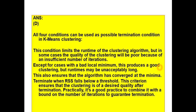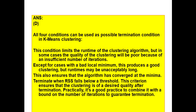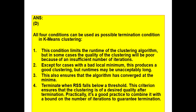The answer to this question is D, that is all of the above. All four conditions can be used as possible termination conditions in k-means clustering. Termination conditions means when the algorithm will stop. The first condition — a fixed number of iterations — limits the runtime of the clustering algorithm, but in some cases the quality of the clustering will be poor because of an insufficient number of iterations.